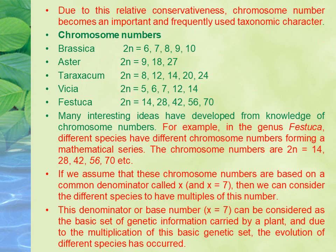For example, if we use chromosome numbers, we can see that Aster species have chromosome numbers 9, 18, and 27 — these form a series where the basic number is 9. So 9×1=9, 9×2=18, 9×3=27. The basic chromosome number here is 9.